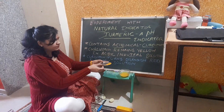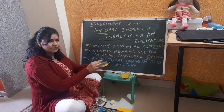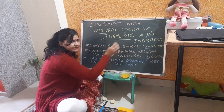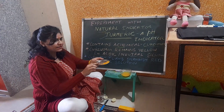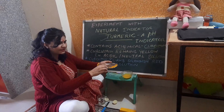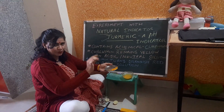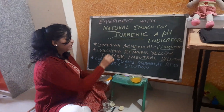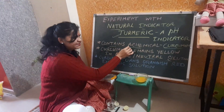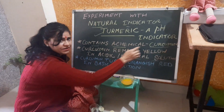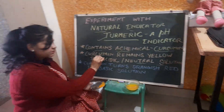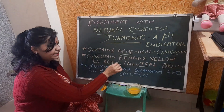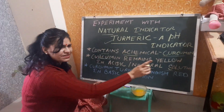Now we have taken turmeric as a natural indicator here. It is a pH indicator. You can see this is the turmeric powder that looks yellow in color. Why is it looking yellow? It contains a chemical called curcumin, and this curcumin remains yellow in acidic or neutral solution.